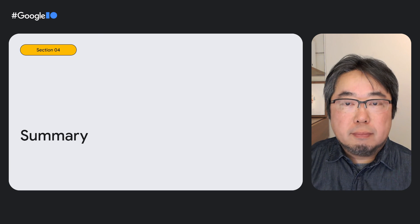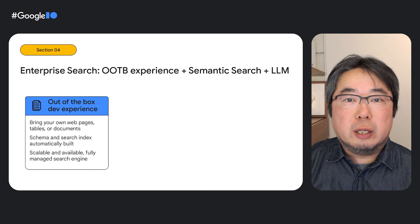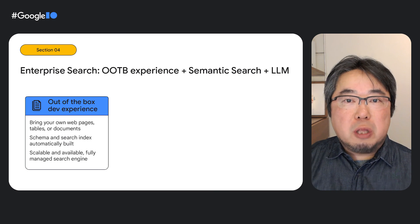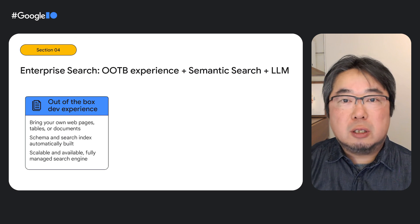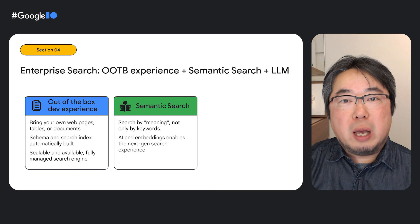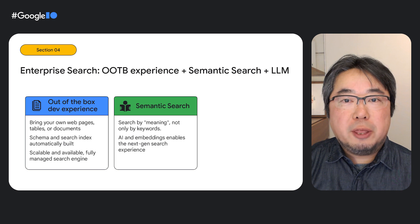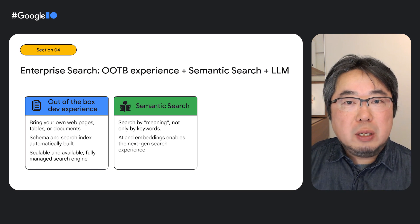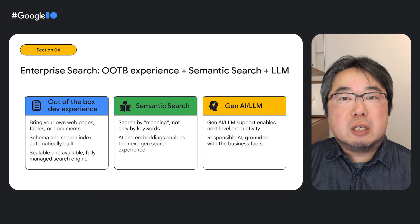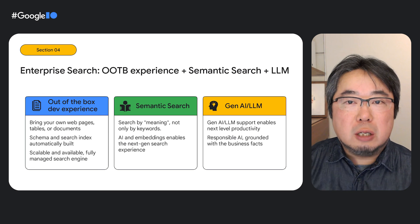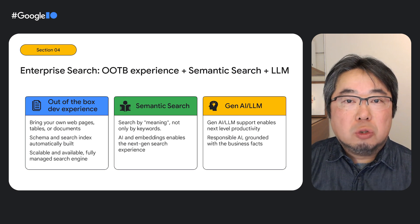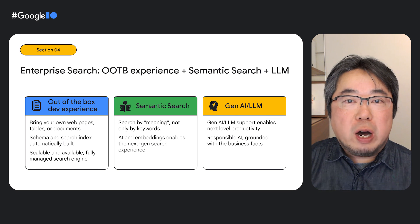Let's recap what we covered this session. As Holt introduced, Enterprise Search gives you an out-of-the-box developer experience. Whether it's web pages, tabular data, or documents like PDF files, you can just bring them in. Enterprise Search automatically builds the schema and search index for your data with a simple UI flow. Second, the semantic search searches by content meaning, not just by keywords — behind the scenes, documents are converted into embeddings, enabling the next-gen search experience. The last point is the LLM capability. With summarization, Enterprise Search saves your time from opening and looking at every page. Instead, you can get the gist of them in seconds, dramatically improving information retrieval productivity in a wide variety of businesses.